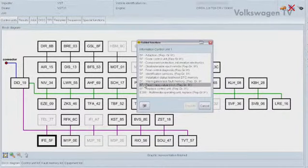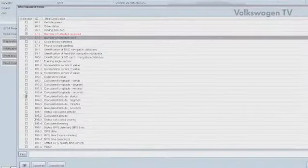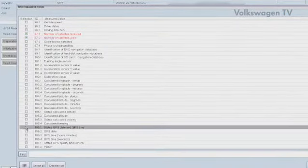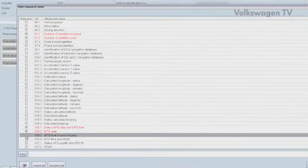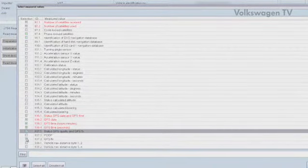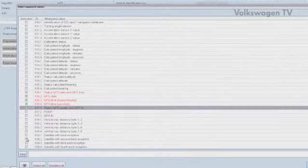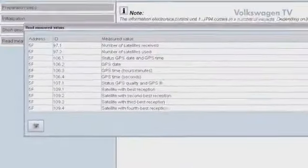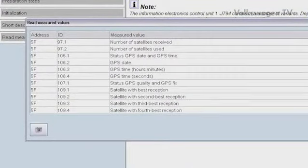Choose the following measured values for the GPS aerial: GPS date and GPS time, GPS quality and GPS fix.